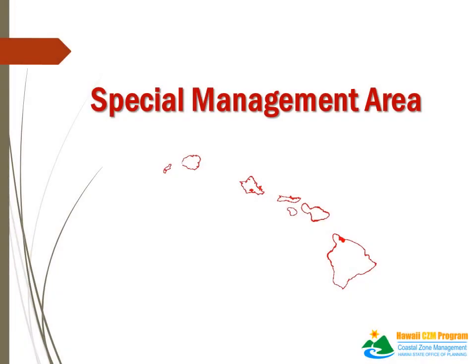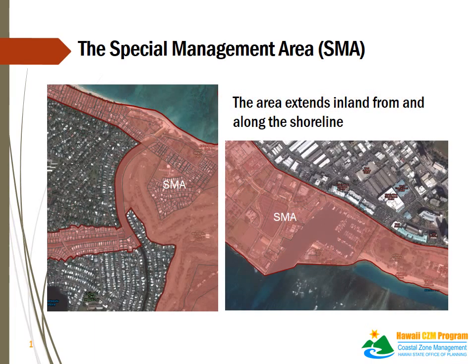Aloha. This presentation aims to help the public and interested groups further understand the Special Management Area and the Special Management Area permit process. The Special Management Area, or SMA, is the area which extends inland from and along the shoreline. The SMA begins at the shoreline and generally extends inland to the nearest highway. Other factors, such as salinity and tidal influences on bodies of surface water, may also affect an SMA boundary.